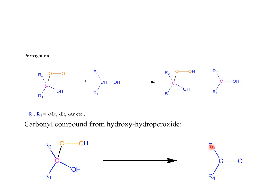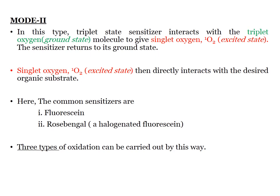In Mode 2 (second way), the triplet state sensitizer interacts with ground state oxygen. Remember, ground state oxygen is in the triplet form. The sensitizer transfers its energy to oxygen; by receiving this energy, oxygen attains excited singlet state, while the sensitizer returns to its ground state. This mechanism was already introduced when we discussed photodimerization reactions.